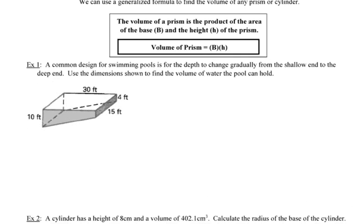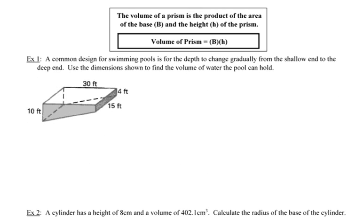the formula that we're going to use is volume is equal to the product of the area of the base, which is represented by a capital B in the formula. So capital B represents area times the height of the prism.